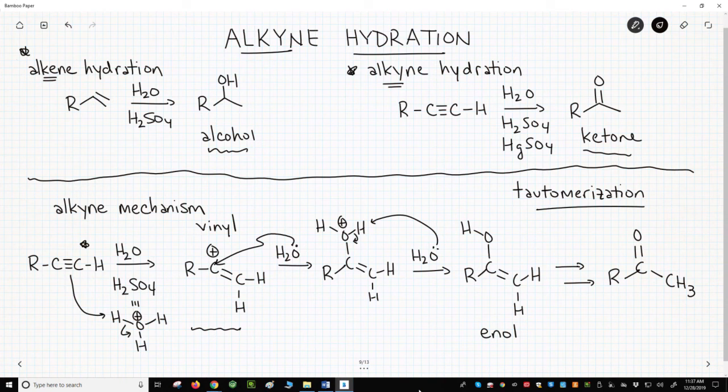Tautomerizations involve the movement of a hydrogen and a pi bond. Our enol tautomerizes to a carbonyl, specifically a ketone.